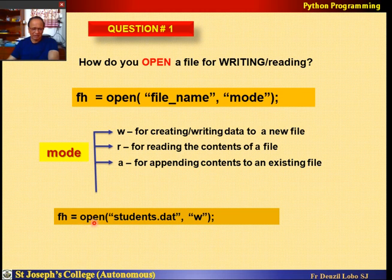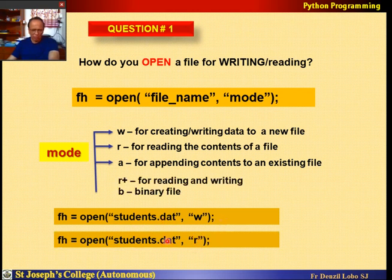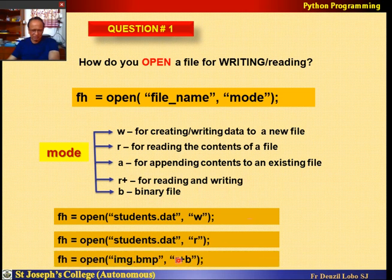For example, fh = open('students.dat', 'w') — this creates a file called students.dat for writing. If a file students.dat already contains data it will be wiped when opened in 'w' mode, so be careful. You can also open students.dat for reading with 'r'. Similarly, you can use 'r+' for reading and writing, and 'b' for binary files. For example, open('image.bmp', 'rb+') opens an image file for reading and writing in binary mode.